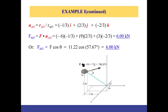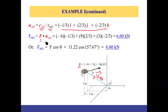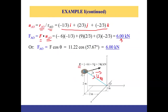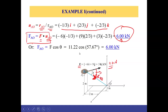Next, we project vector F along the direction AO. We find the unit vector u_AO by dividing the position vector by its magnitude — this is dimensionless and gives only the direction. The dot product of force vector F with unit vector u_AO gives the magnitude of force acting along that direction: 6 kN. So out of 11.22 kN total, 6 kN acts along direction AO. We will do one more problem of this style in the next video.